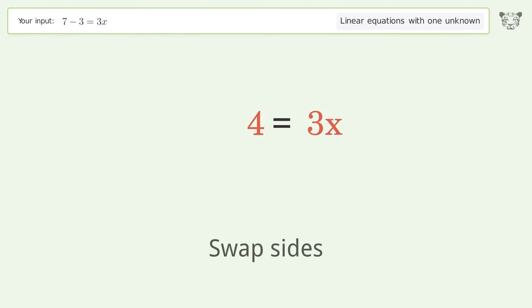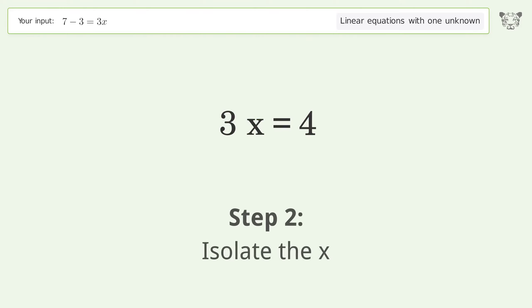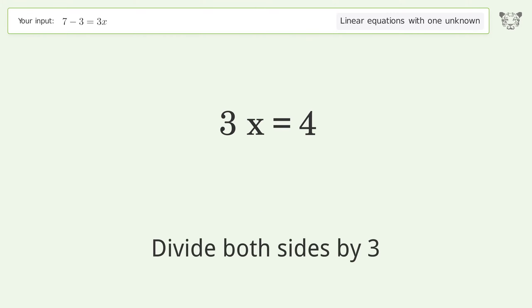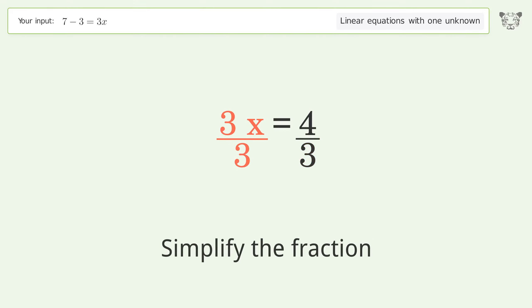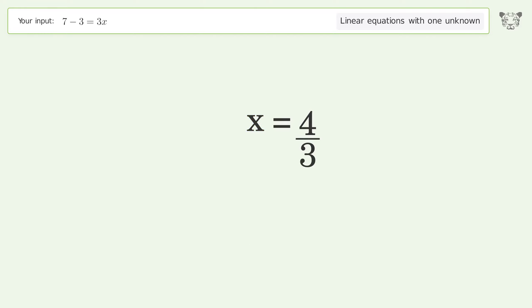Swap sides. Isolate the x — divide both sides by 3. Simplify the fraction. And so the final result is x equals 4 over 3.